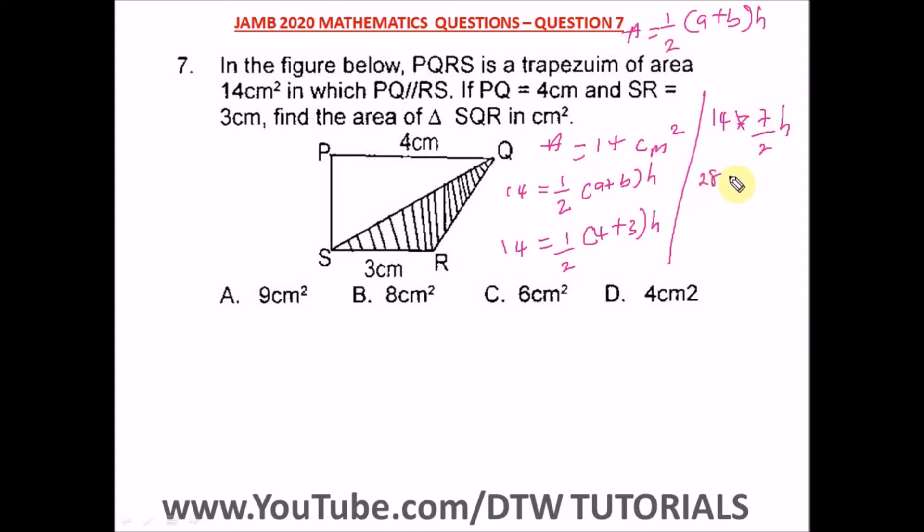have 28 = 7h. So if you solve for h, you have h = 28/7. Our height equals 4 centimeters. Now we found the height of the shape, so we can solve for the area of the triangle.